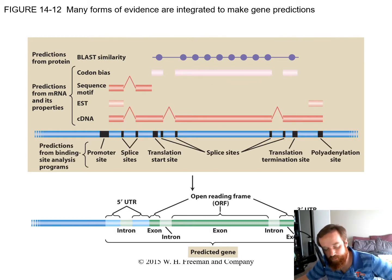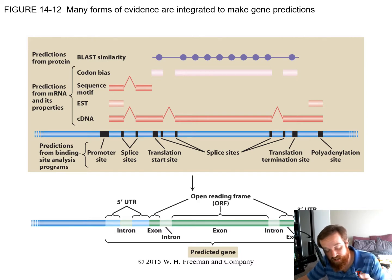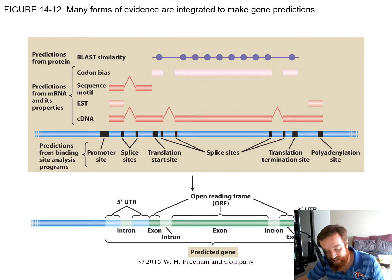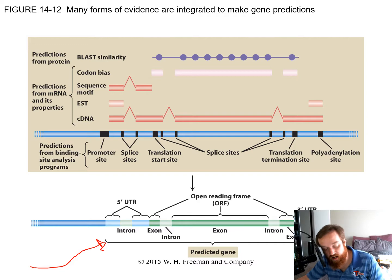On top of codon bias, we can add predicted splice sites — we remember the AGGU sequence where cuts occur between introns and exons. Combining all this information gives us a predicted gene structure: the UTRs, exons, introns, and so on. If a sequence looks like a gene, BLASTs like a gene, has matching cDNA, and uses the same codons as the rest of the genome, it is more likely to be a gene.